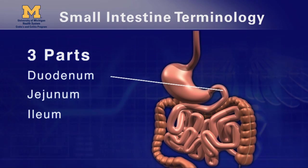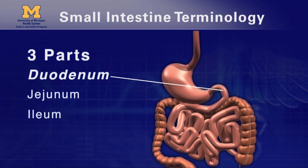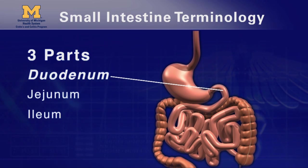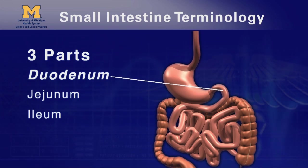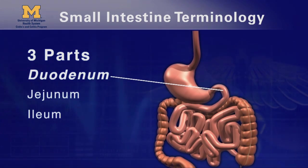The first part is called the duodenum. It's short — only about 10 inches long — and shaped a bit like a horseshoe. It's here that fluids from your gallbladder and pancreas are added to the food to break down proteins and fat, and neutralize the acid in the food from your stomach.